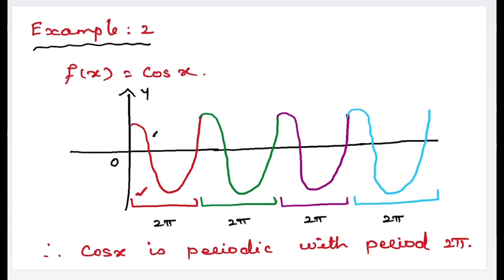Similarly, tan x and cot x are periodic with period π, and sin(nx) and cos(nx) are periodic with period 2π/n. Therefore, a function that repeats its values at regular intervals is called a periodic function.